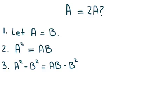Step three, subtract B squared from both sides of the equation so that you're left with A squared minus B squared is equal to AB minus B squared.